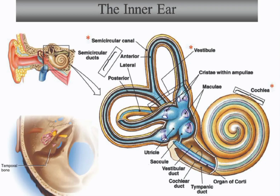The inner ear consists of two main parts. Cochlea is a spiral-shaped organ that is filled with fluid and lined with hair cells. It is responsible for converting sound vibrations into electrical signals that are sent to the brain.